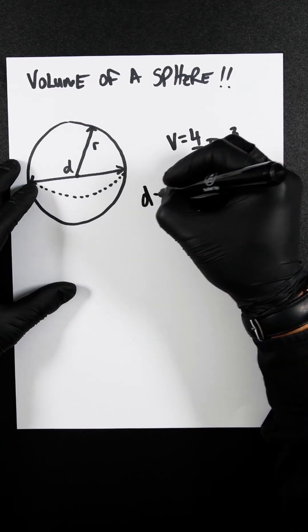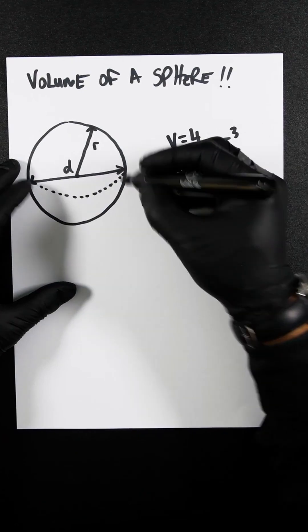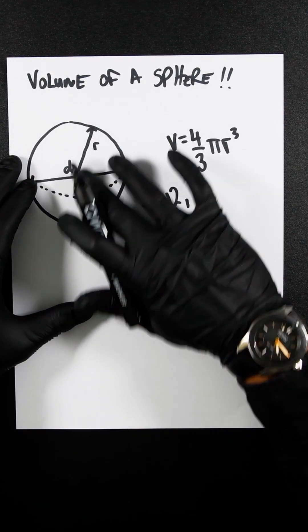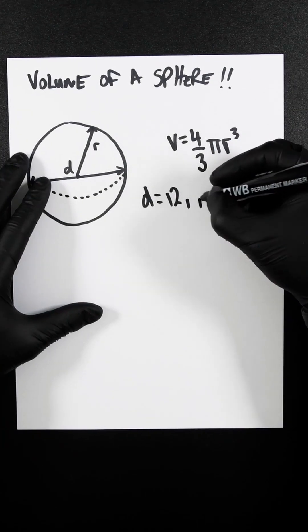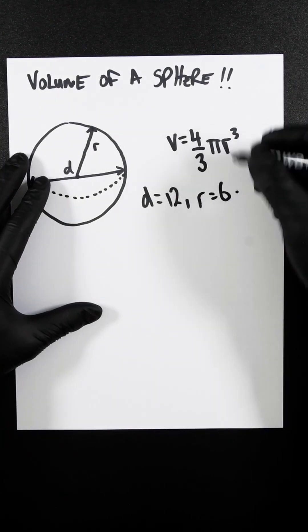Let's say the diameter is 12. That's the distance between here and here. We need to find out what the radius is. The radius is just half the diameter, so r would be 6. Now let's plug it in.